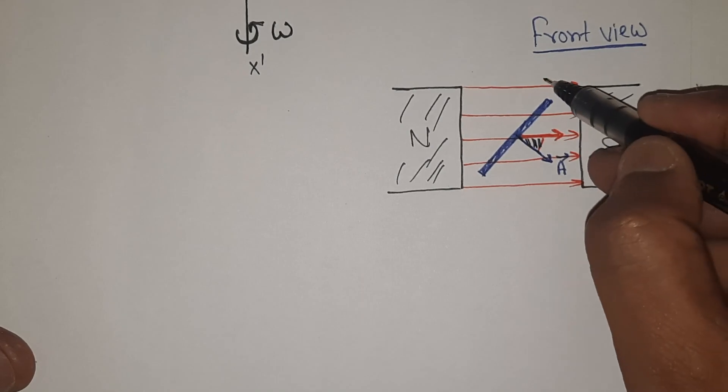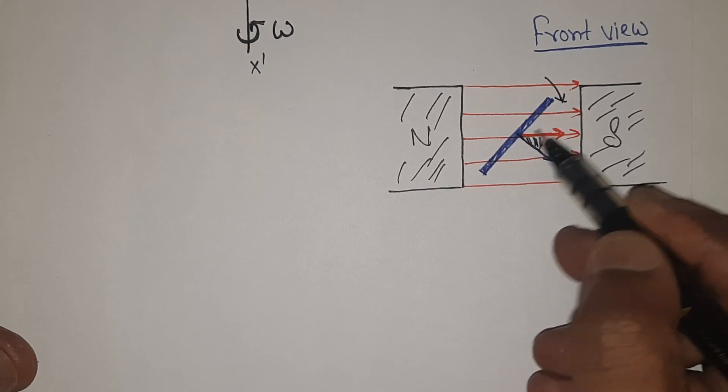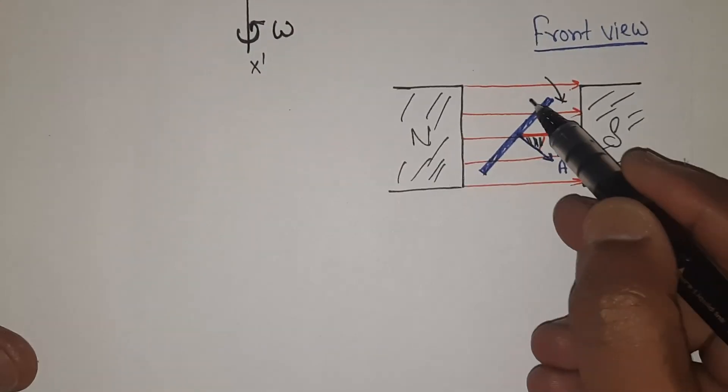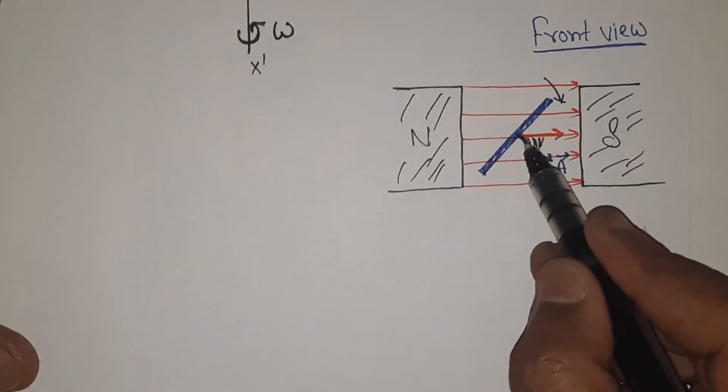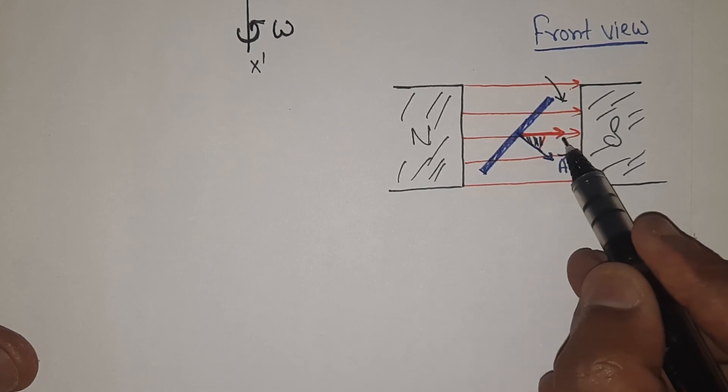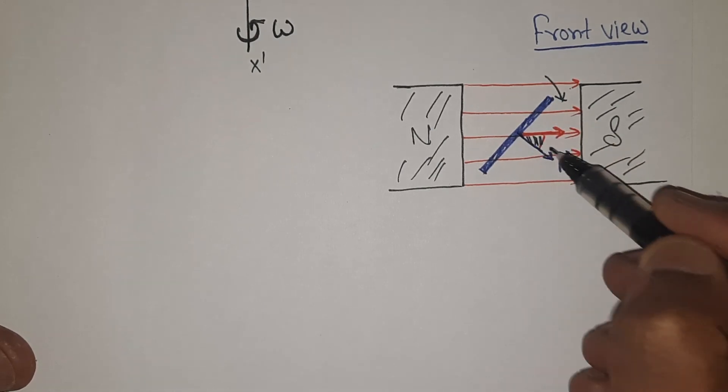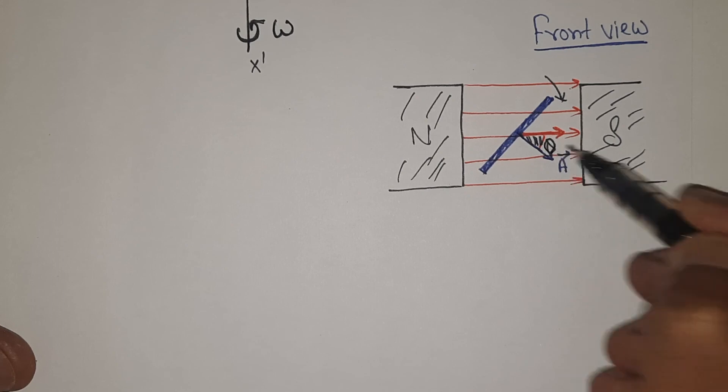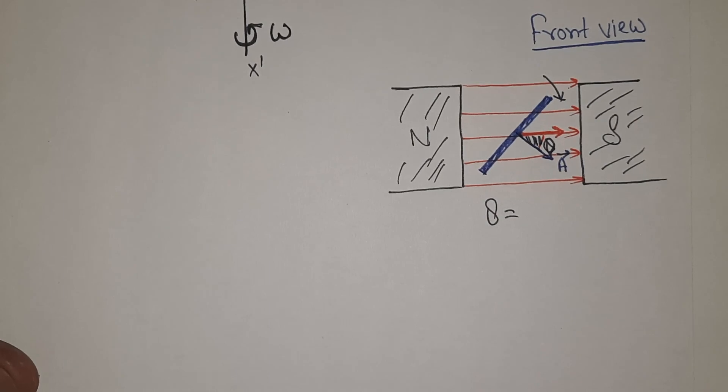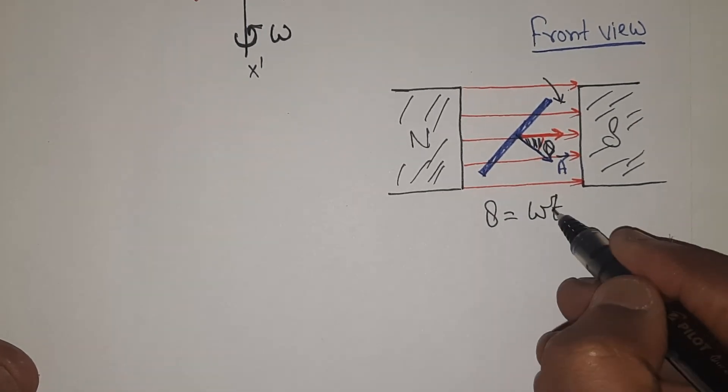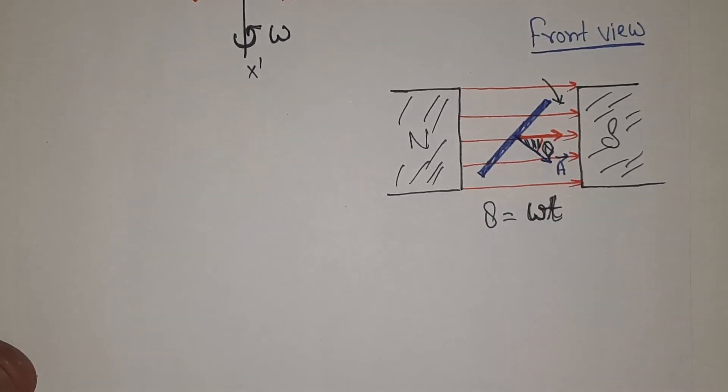Suppose this is rotating like this. It was in horizontal position at zero time, and at time t, its position is here. From this position it started and traveled. When it was in this position perpendicular to magnetic field, area vector was along the magnetic field. And at time t it reached here, so area vector is making an angle theta with the horizontal. Theta will be equal to omega into t.